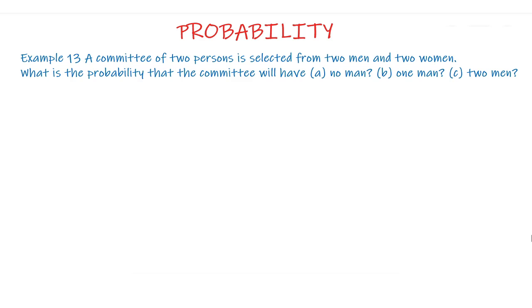A committee of two persons is selected from two men and two women. What is the probability that the committee will have part A no men, part B one men, part C two men.